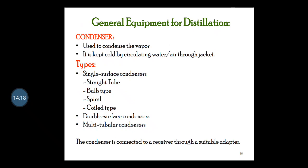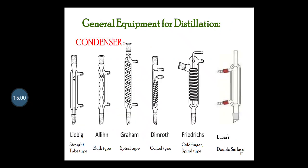A condenser is used to condense the vapor and is kept cold by circulating water or air through the jacket. Types of condensers include single surface condenser (with subtypes: straight tube, bulb type, spiral, and coil type), double surface condenser, and multi-tubular condensers. The condenser is connected to a receiver through a suitable adapter. Examples of condensers include straight tube type, bulb type, spiral type, coil type, cold finger or spiral tube, and Liebig (double surface) condenser.